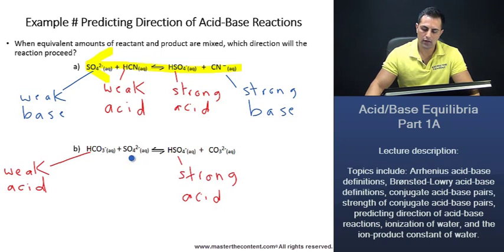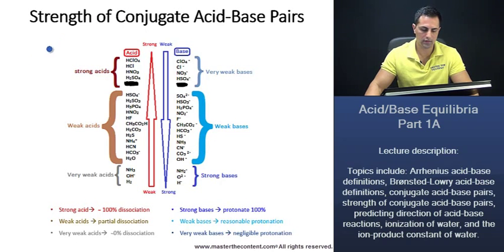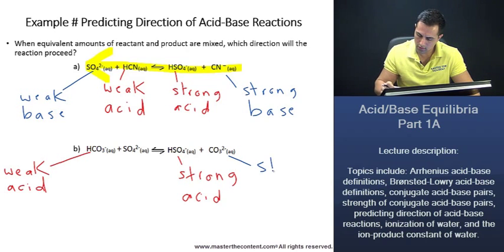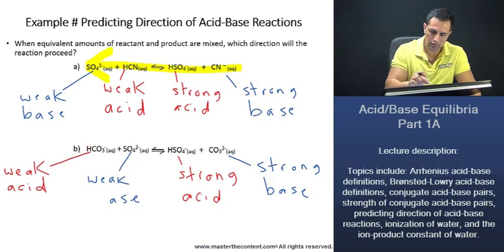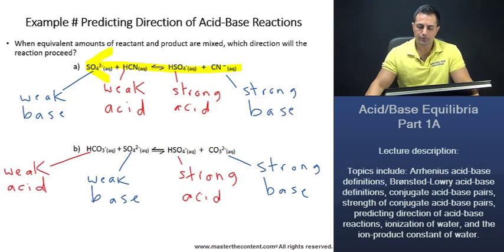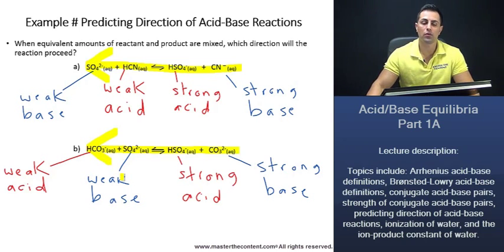Now we do the same and check whether sulfate or carbonate is the stronger base. Going back to the chart, carbonate is all the way down here and sulfate is up here. Therefore, carbonate is the stronger base. We label carbonate as our strong base and sulfate as our weak base. Because the reaction always goes from stronger acids and bases to weaker acids and bases, this reaction goes from right to left. Now we're ready to move on to our next slide.